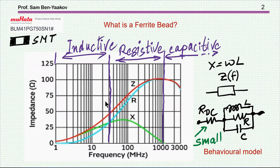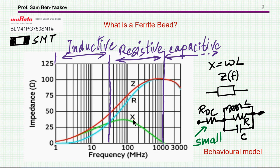So let me start with the background. What is a ferrite bead? A ferrite bead is an element which has some impedance — an impedance that is a function of frequency. It could be an SMT unit, but there are many other shapes. What we see here is the general behavior of the total impedance, broken down into a resistive and inductive part. At the very beginning the element behaves inductively, because the inductive part is higher than the resistive, and then the resistive part becomes more dominant.